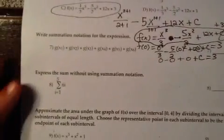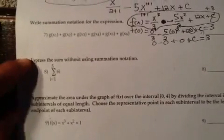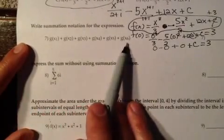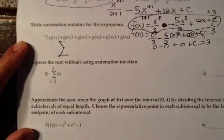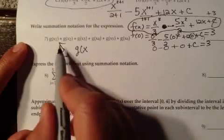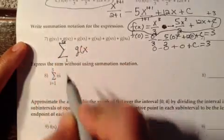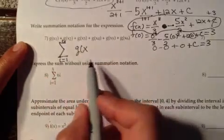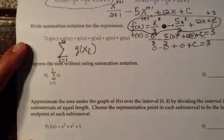On number 7, we're supposed to write the summation notation for this expression. We have 6 terms all being added together. What we're summing up, all of these have a g of x, and the numbers start at 1 and go up to 6. So we say i equals 1 to 6, and we're summing up g of x sub i's.